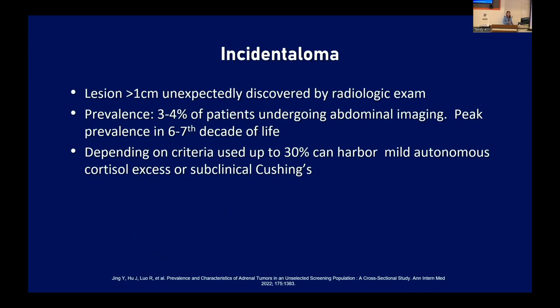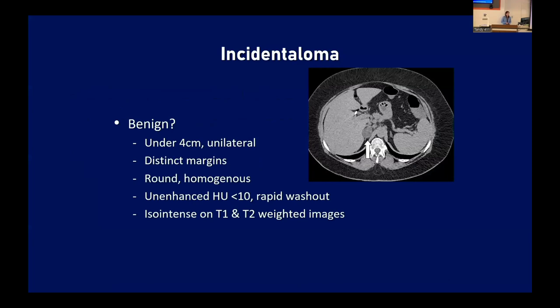Moving on to what an internist will most commonly see — the incidentaloma. This is defined as a lesion greater than one centimeter unexpectedly discovered during a radiologic exam. Prevalence is about 3 to 4% of patients undergoing abdominal imaging, peaking in the sixth to seventh decade of life. Up to 30% can harbor mild autonomous cortisol excess or subclinical Cushing's, though with more specific testing that rate is probably closer to 10% with stricter criteria.